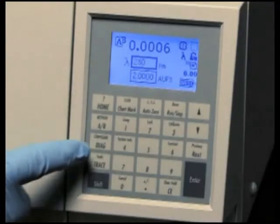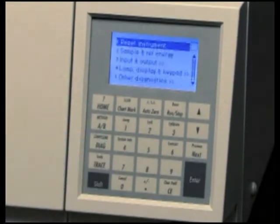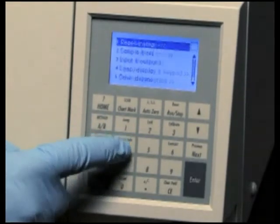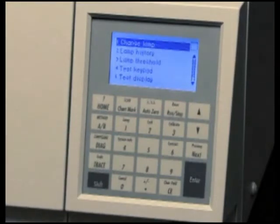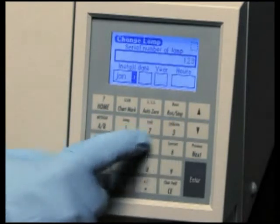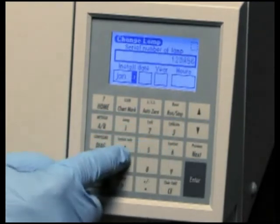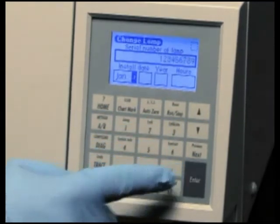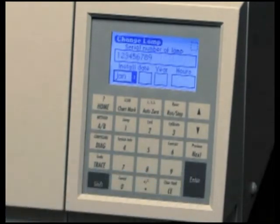To record this number, press the Diagnostics key to enter Diagnostics. Press 4 to select the Lamp Display and Keypad diagnostic. Press 1 to Change Lamp. Enter the nine-digit serial number of the new lamp in the active field. This field only accepts numeric entries. Press Enter to store the serial number and move to the Date Installed field.